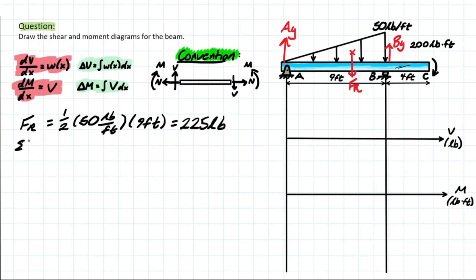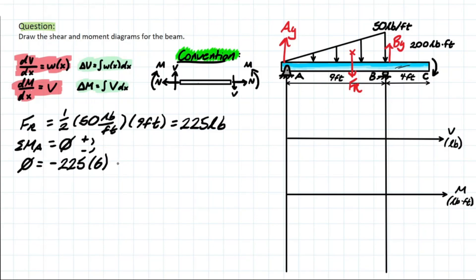Next, we take the summation of moments at A equal to zero so we can solve for the reaction at B. We need the distance between the pin and the distributed load's resultant force, which is two-thirds of the span — that's six feet. The first term is negative because it creates a clockwise rotation from A, with the force six feet away.